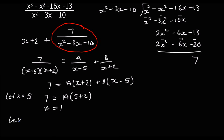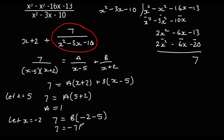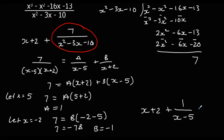Letting x equal negative 2: 7 = B(−2 − 5), giving 7 = −7B, so B is negative 1. So we rewrite this as x plus 2 plus 1 over (x − 5) minus 1 over (x + 2).